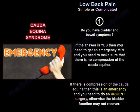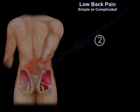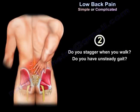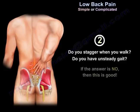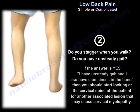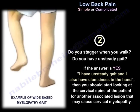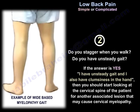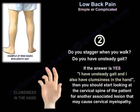The second question: do you have unsteady gait — do you stagger when you walk? If no, that's good. If yes, and the patient also has clumsiness in the hand, you should start looking at the cervical spine for an associated lesion that may cause cervical myelopathy.